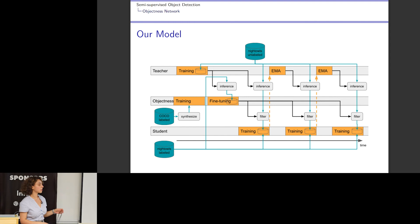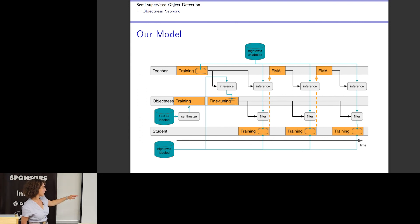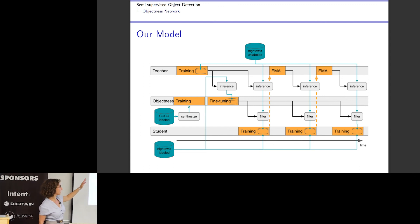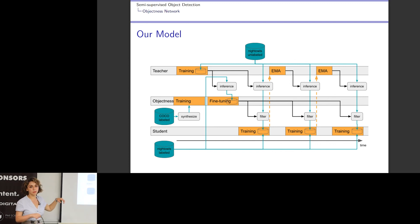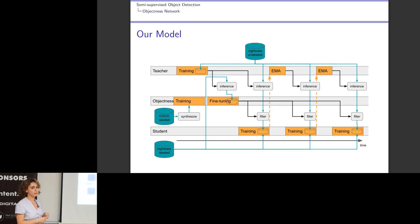We have a teacher network trained on labeled examples. Then we have a student network trained on labeled examples plus unlabeled examples with pseudo-labels provided by the teacher. Both the teacher and student models have the same architecture — they are both Faster RCNN.